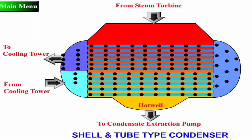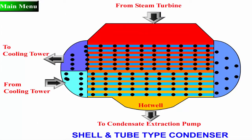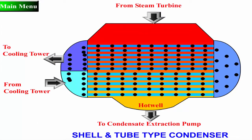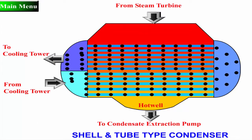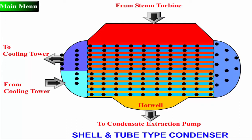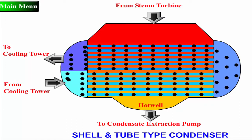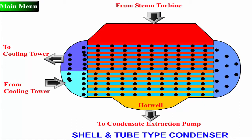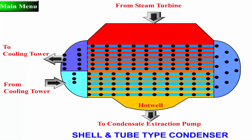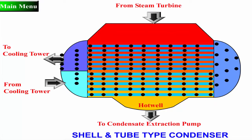A surface condenser is a commonly used term for a water-cooled, shell and tube heat exchanger, installed on the exhaust steam from a steam turbine in thermal power stations. These condensers are heat exchangers which convert steam from its gaseous to its liquid state.